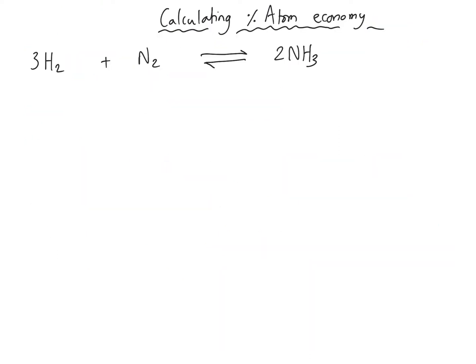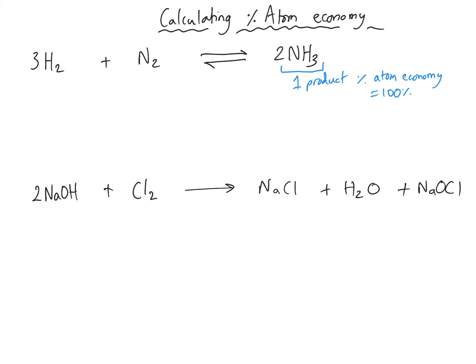Let's move on now to take a look at how we calculate percentage atom economy. This first equation encapsulates the ideas from the previous slide really nicely. There is only one product, and since there is only one product, this is 100% atom economy. However, you will recognise the reversible reaction symbol, which tells us that the percentage yield is definitely not going to be 100%. The second equation is the reaction of sodium hydroxide and chlorine to produce specifically sodium chlorate(I), which is used in bleach — a really useful product — and also sodium chloride and water as byproducts. We can work out the percentage atom economy from here.